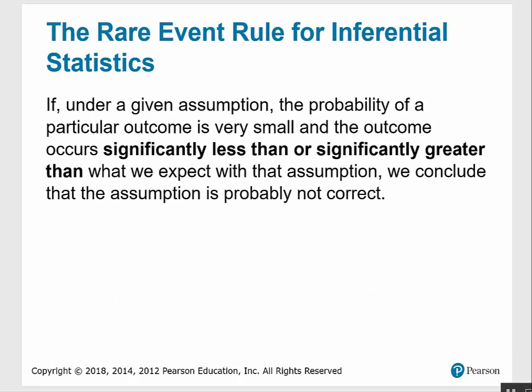The rare event rule for inferential statistics: if under a given assumption the probability of a particular outcome is very small and the outcome occurs significantly less or significantly greater than what we expect with that assumption, we conclude the assumption is probably not correct. Last but not least, we're going to do a problem where we determine if the outcome is significant based on probabilities.